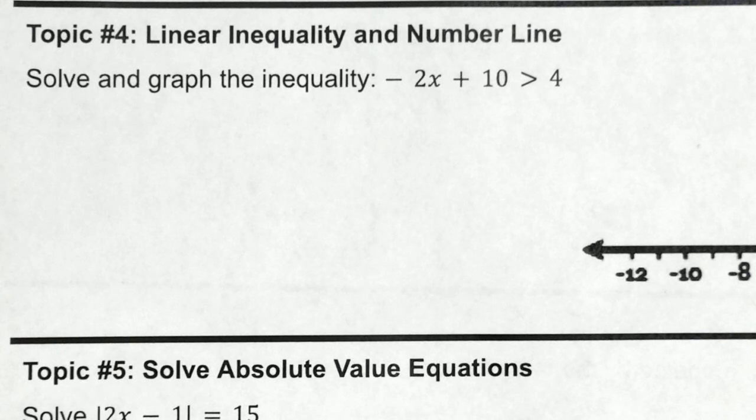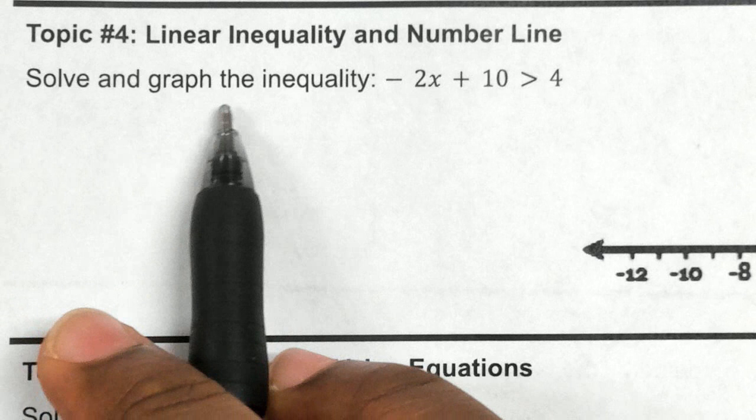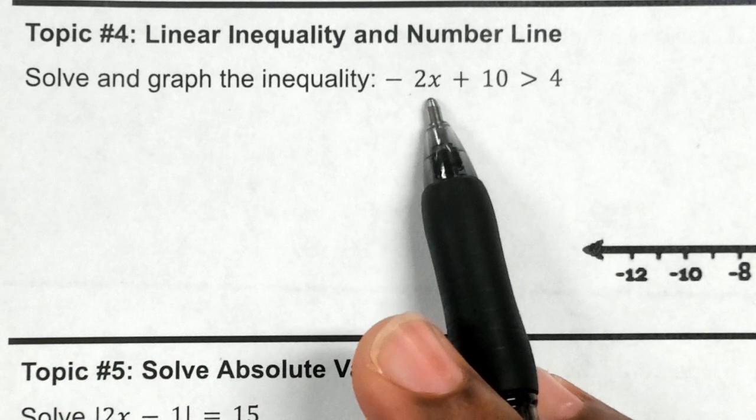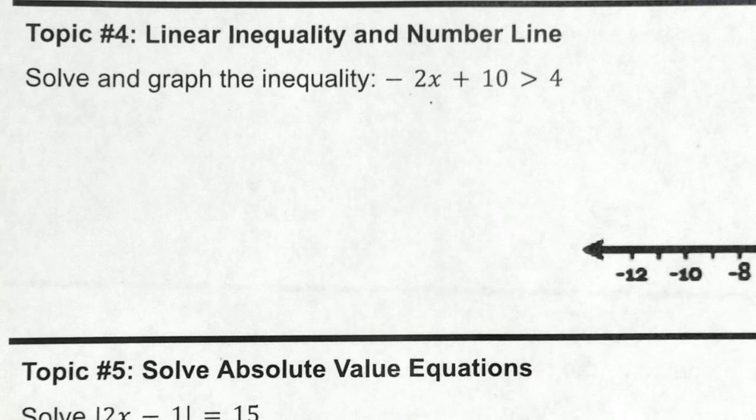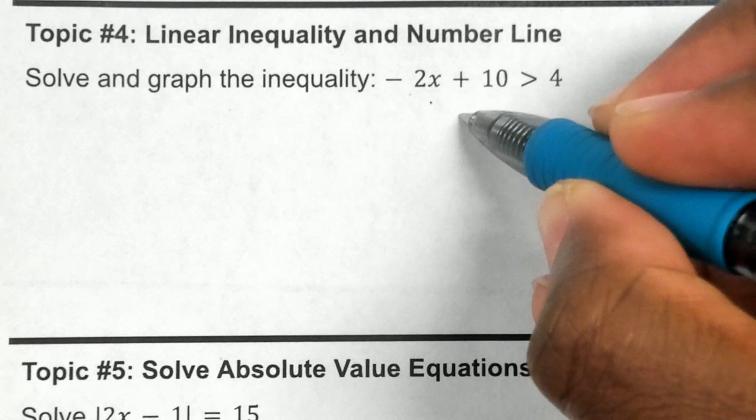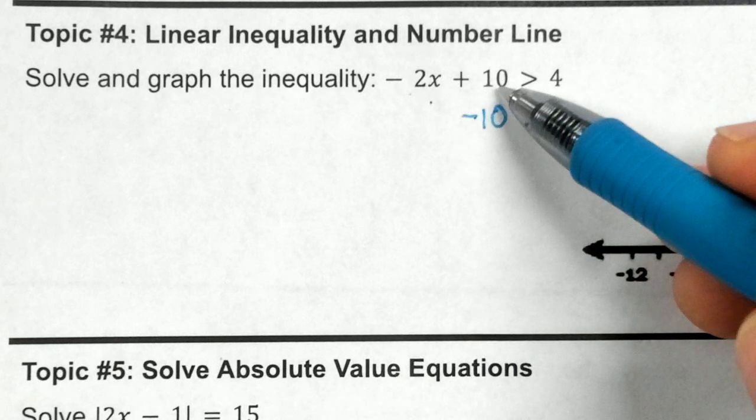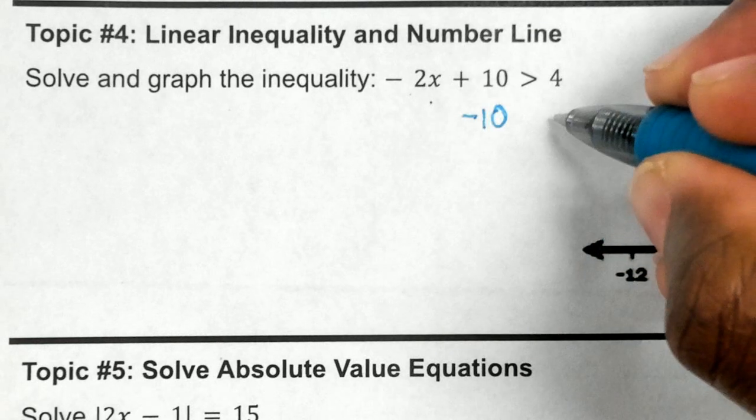Question number four wants us to solve and graph the inequality. When we're solving this, the aim is to get x all by itself. So the first thing I need to do is move my constant to the other side by subtracting 10. The opposite of adding 10 is subtracting 10, so we need to do the same thing on the other side of our operator.